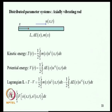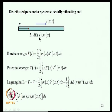For distributed parameter systems, consider an axially vibrating rod of length L, axial rigidity AE (E = Young's modulus, A = cross-sectional area), and mass per unit length m. The displacement is U(x,t) - it is a continuous system with infinite DOF. The kinetic energy is T = ∫₀ᴸ ½m(∂U/∂t)² dx. The potential energy from axial deformation is V = ∫₀ᴸ ½AE(∂U/∂x)² dx, derived from a simple rod model.